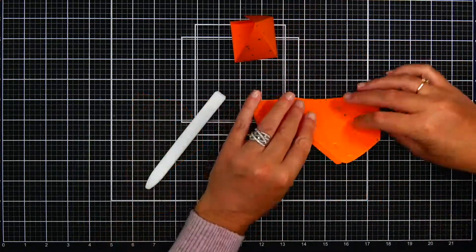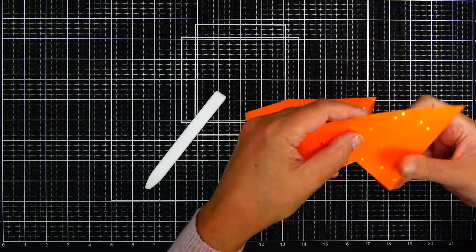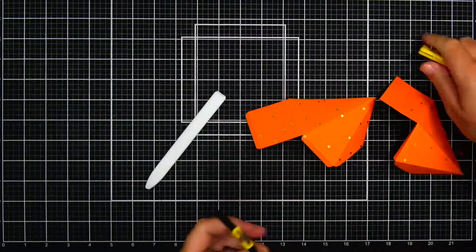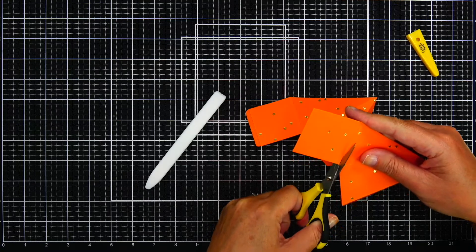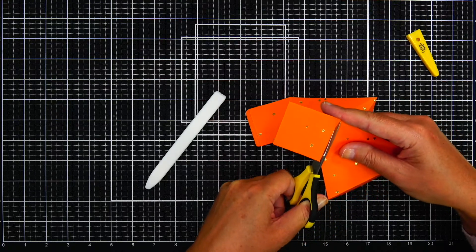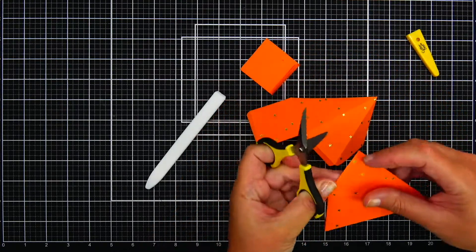I'm going to repeat the folding on the second panel, and then I'm going to use my scissors to cut off a flap off of one of the panels.